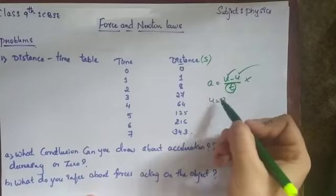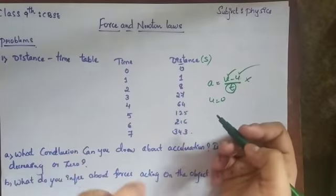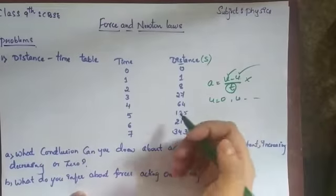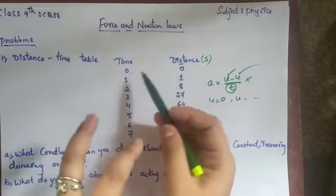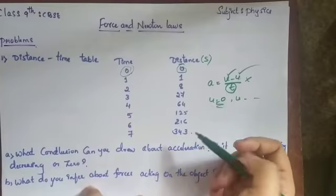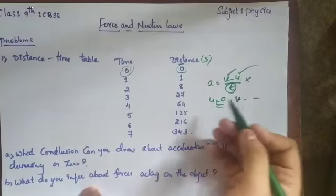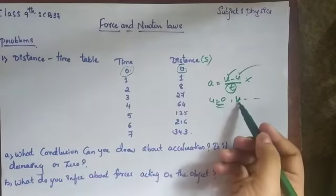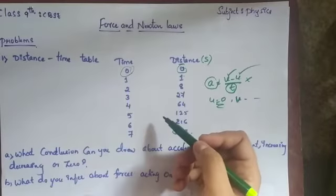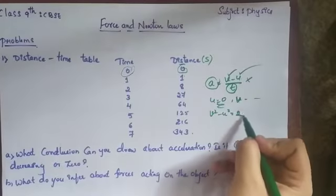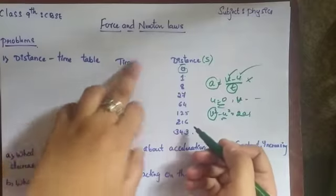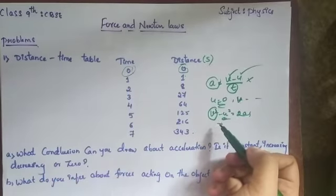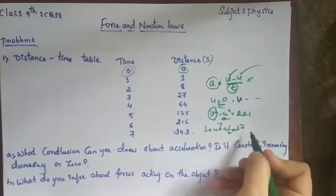From the table, at time zero the distance is zero, which tells us the initial velocity u = 0 — the body was at rest before an external unbalanced force was applied. The final velocity v is unknown, so we also cannot use v² - u² = 2as. The remaining formula is s = ut + ½at².